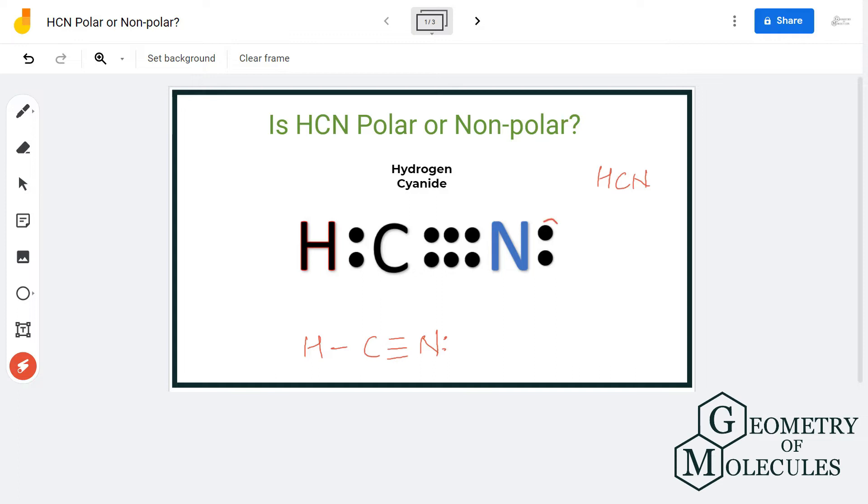Apart from that, there is a lone pair of electrons on nitrogen atom. The polarity of a molecule depends on the difference of electronegativities between the atoms, the dipole moment, and any lone pairs present on the atom.